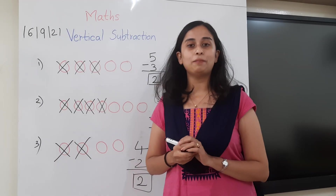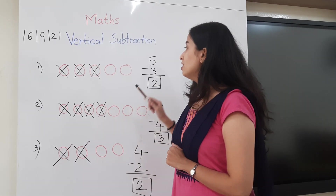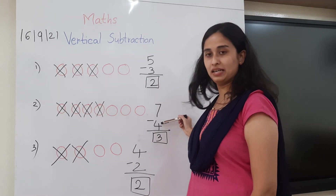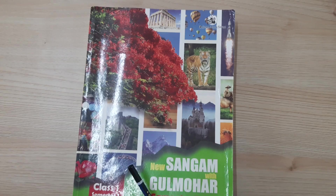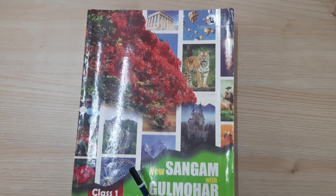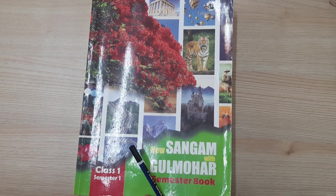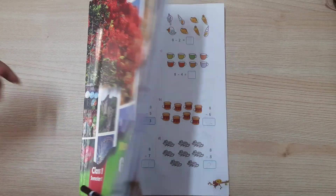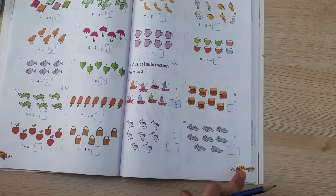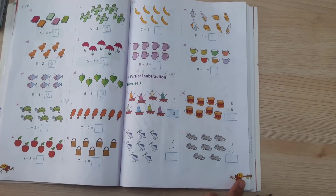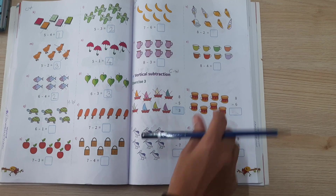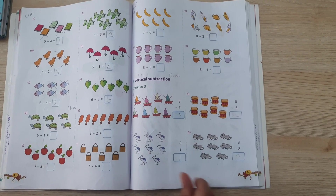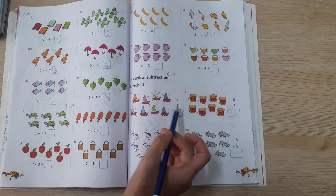It is called vertical subtraction because we are arranging the numbers in a vertical manner. So now everyone open your Sangam with Gulmohar book, go to the maths section and open page number 43. Here are some vertical subtraction sums that we are going to solve right now.